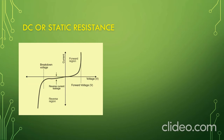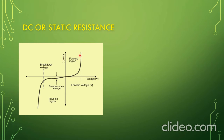This is the volt-ampere characteristic curve of a PN diode. This side is the forward voltage side and this side is the reverse voltage side. This side is current — this is the forward region current and this is the reverse region current.